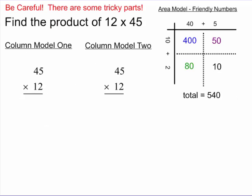You'll notice in this first example, 12 times 45, in the upper right hand corner, I have this area model of the solution. So we're going to use this as a landmark. So if we get a little lost in the column models, we can always come back here and look to see where some of those numbers came from. So let's jump right in with column model number one.